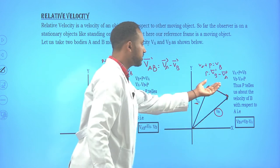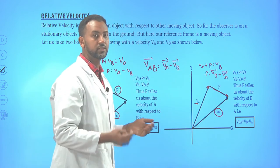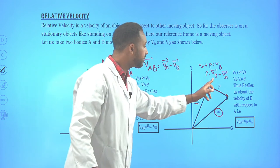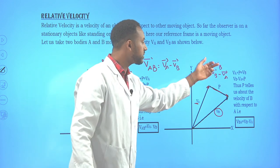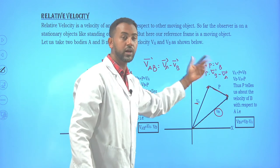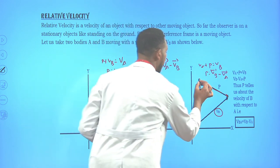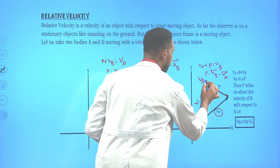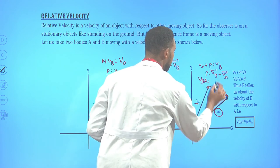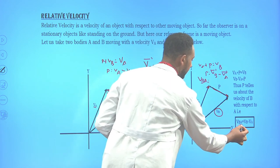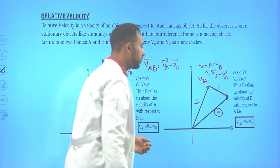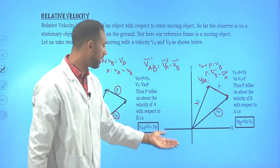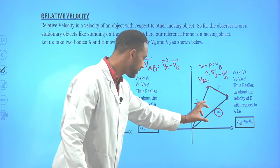The relative velocity of car B with respect to an observer on car A can be determined using V_BA = V_B − V_A. This is a general equation that can be used for different cases — same direction, opposite direction, at an angle, or perpendicular.